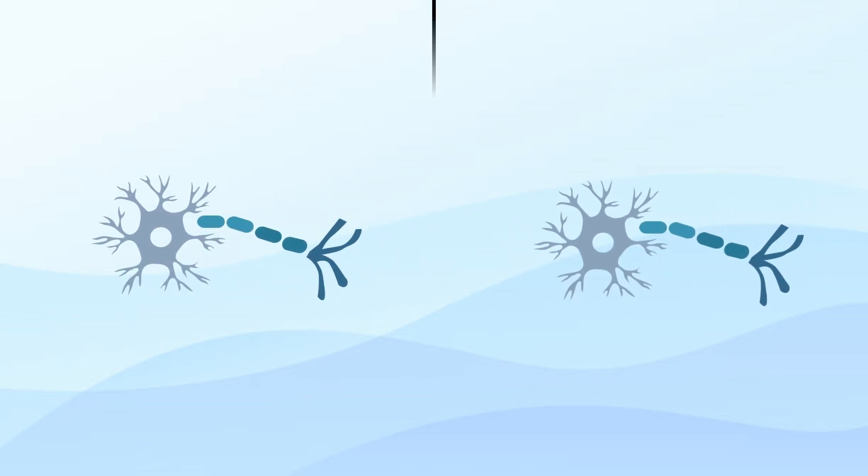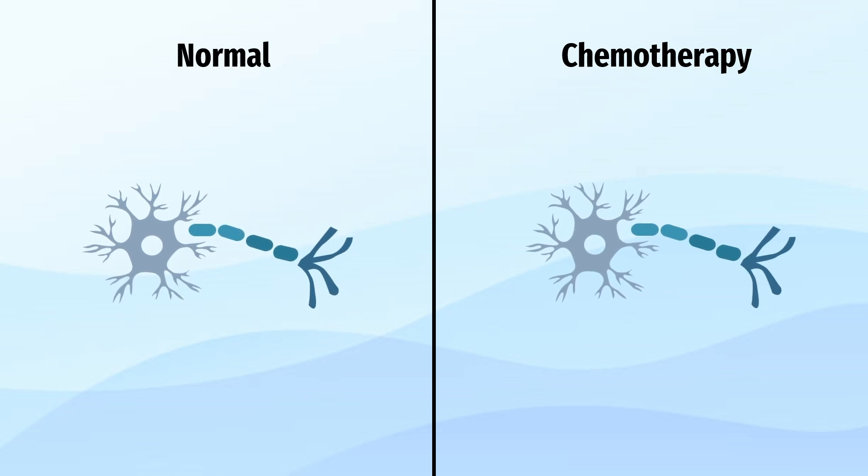The axon is enveloped by a protective layer called a myelin sheath, which enhances the speed of signal transmission. During chemotherapy, the production of myelin by oligodendrocytes is suppressed, and the existing myelin may become damaged.